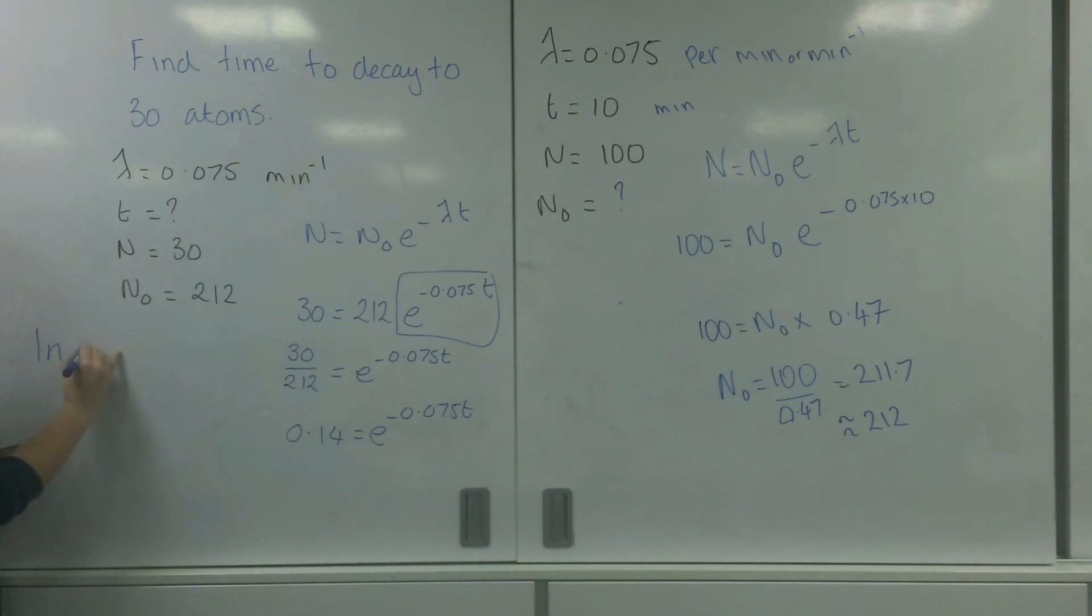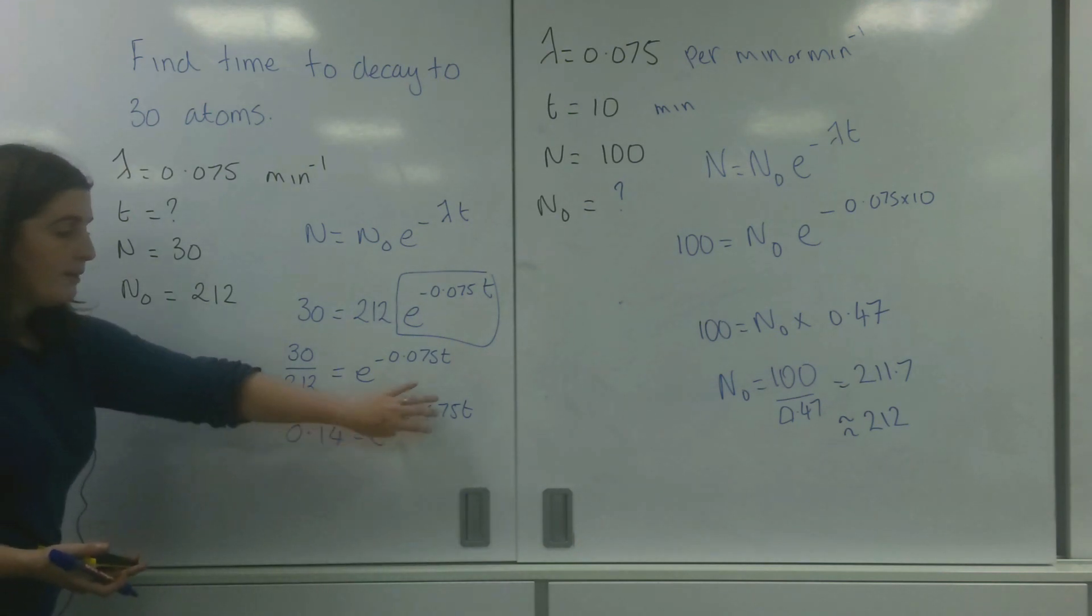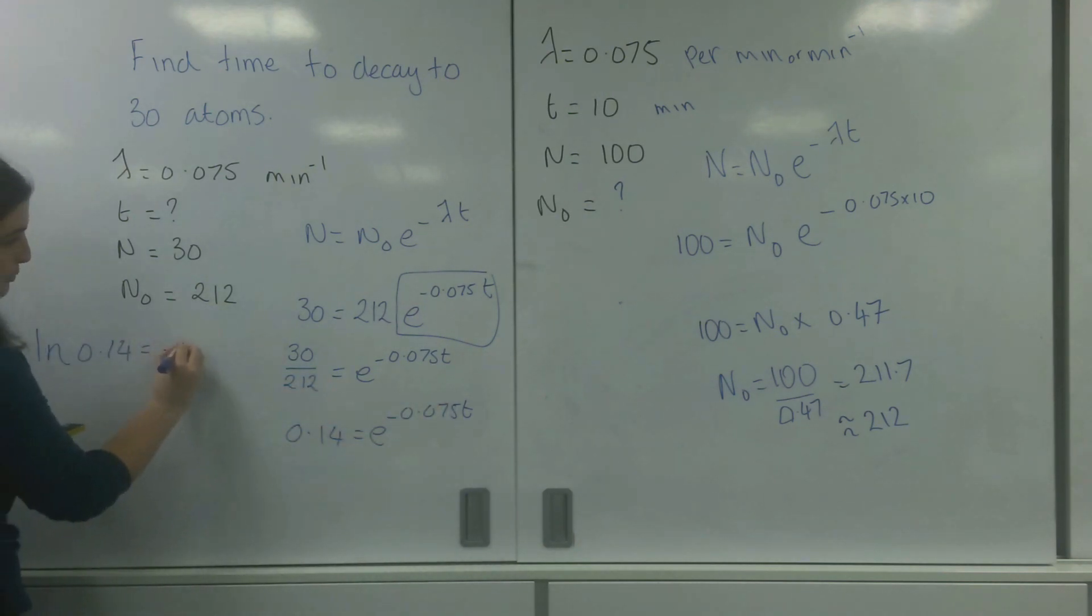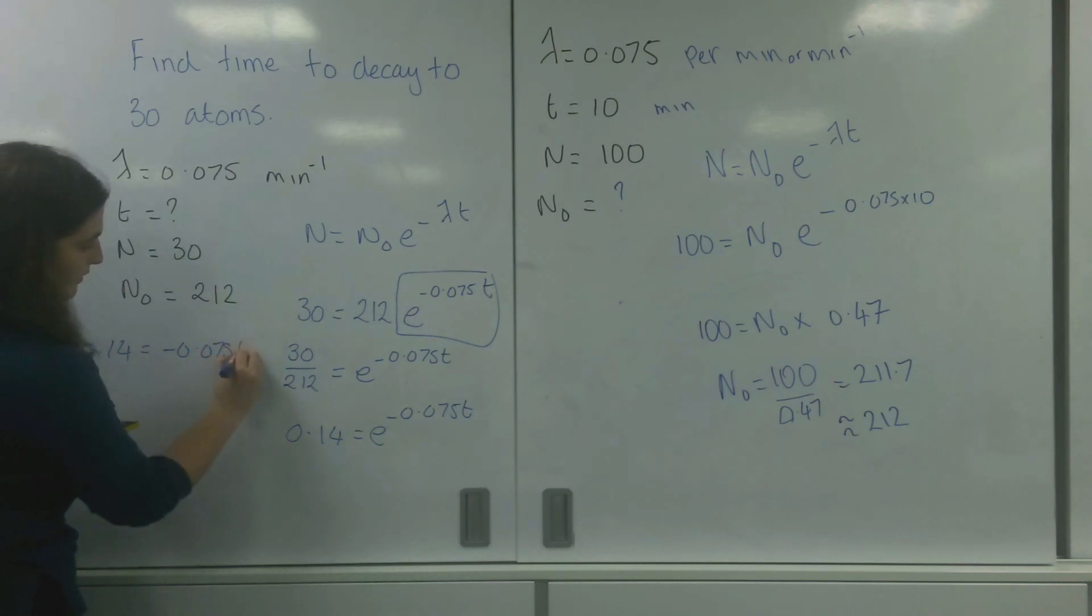I'm going to ln this side. And what that will do is get rid of this E and bring that down to the normal thing here. So I've got minus 0.075 t.